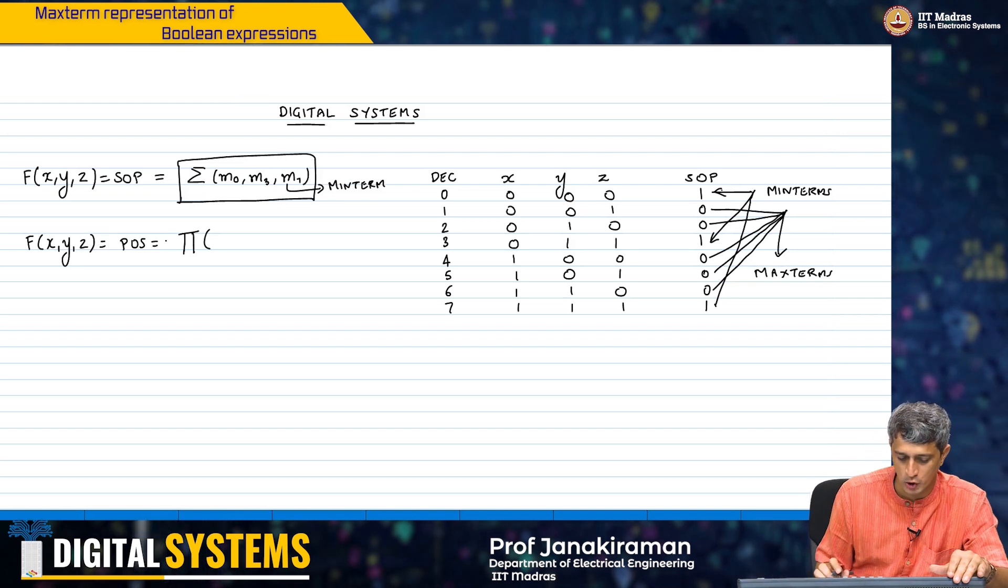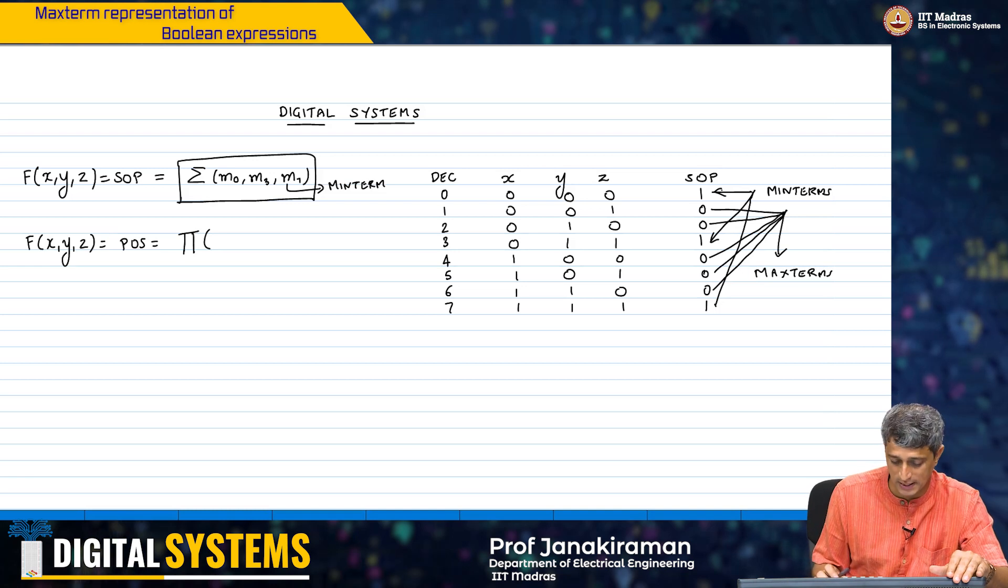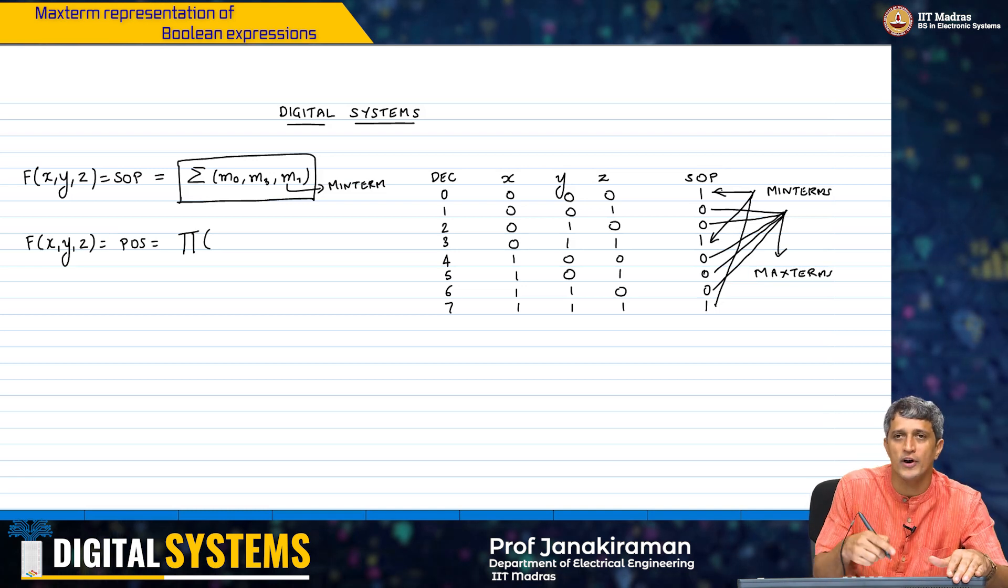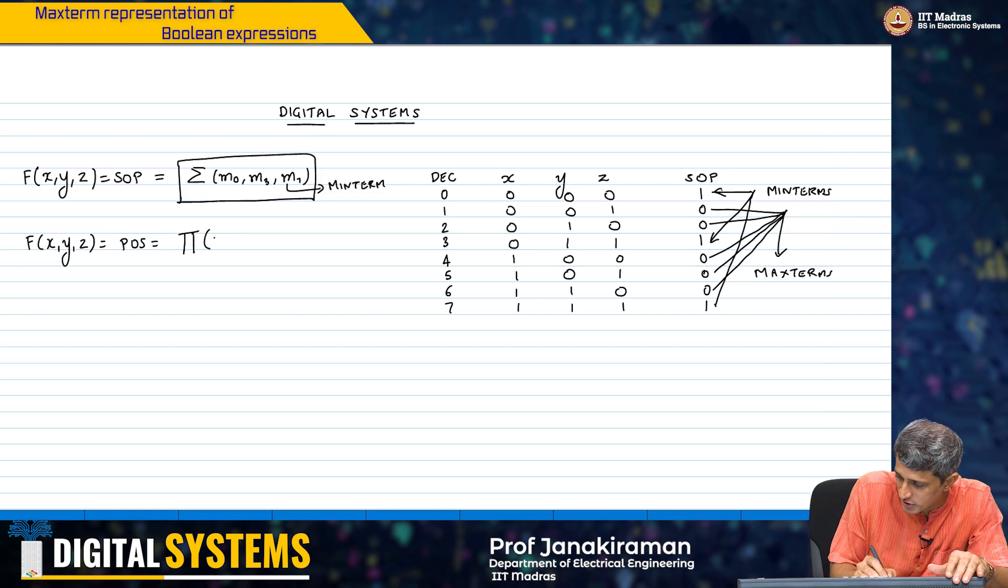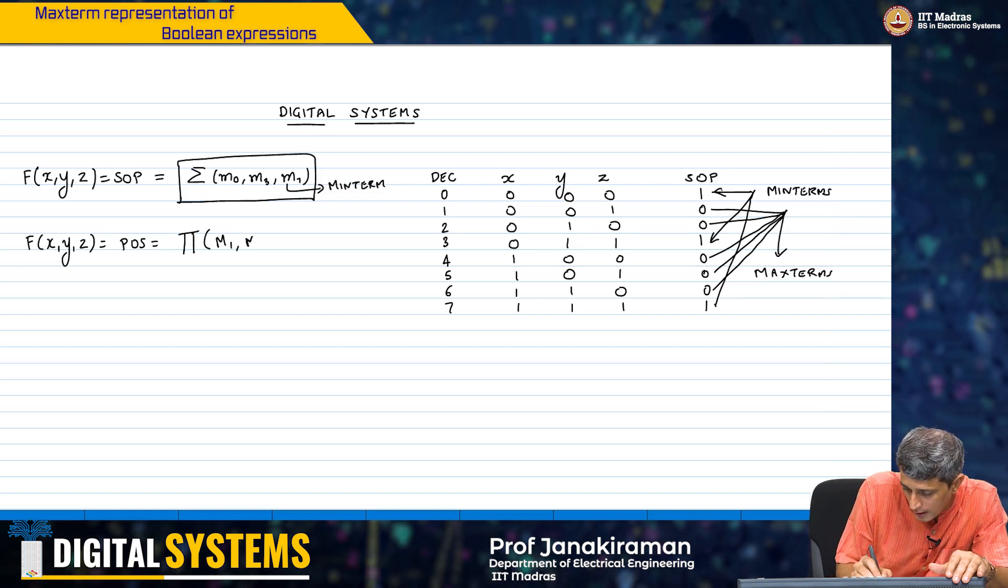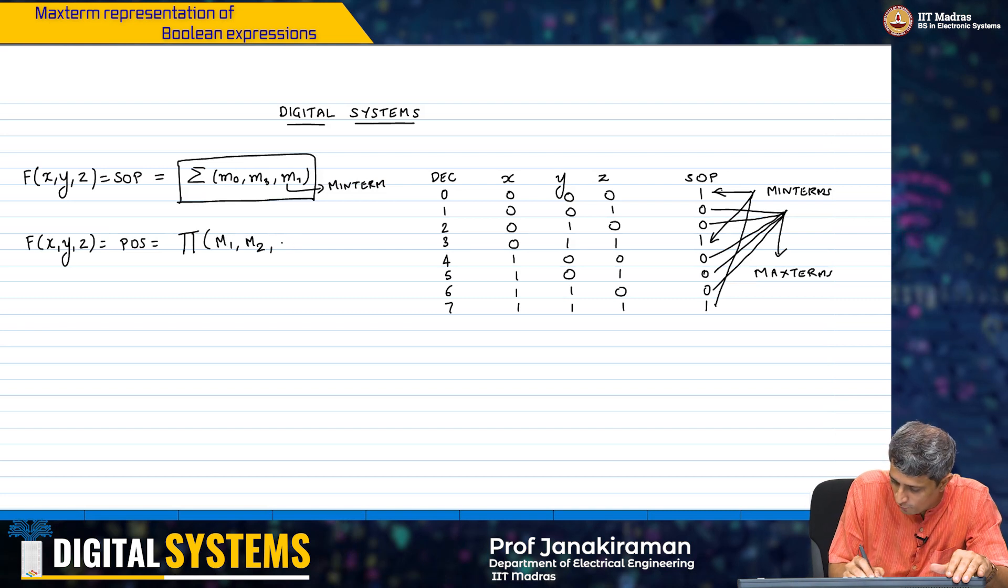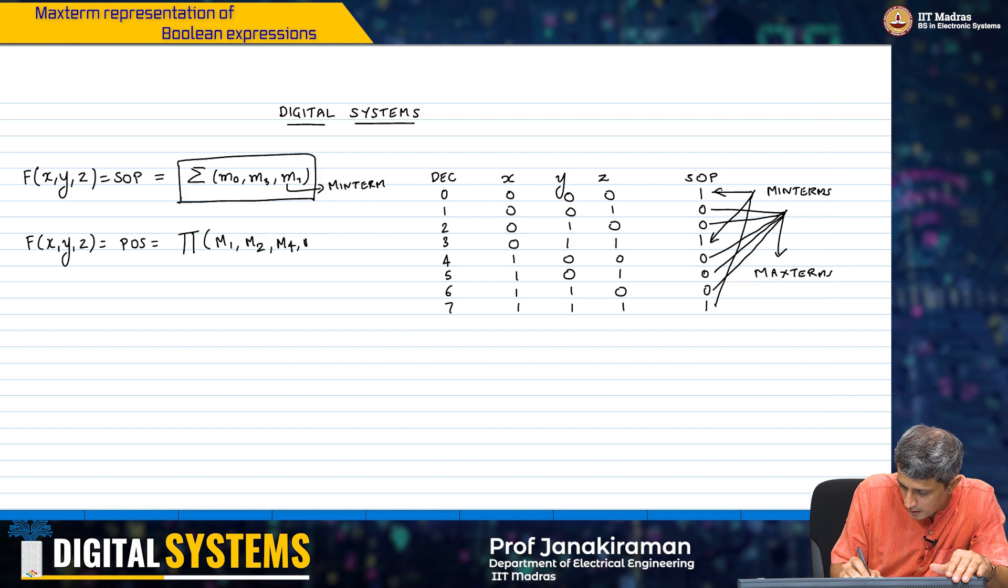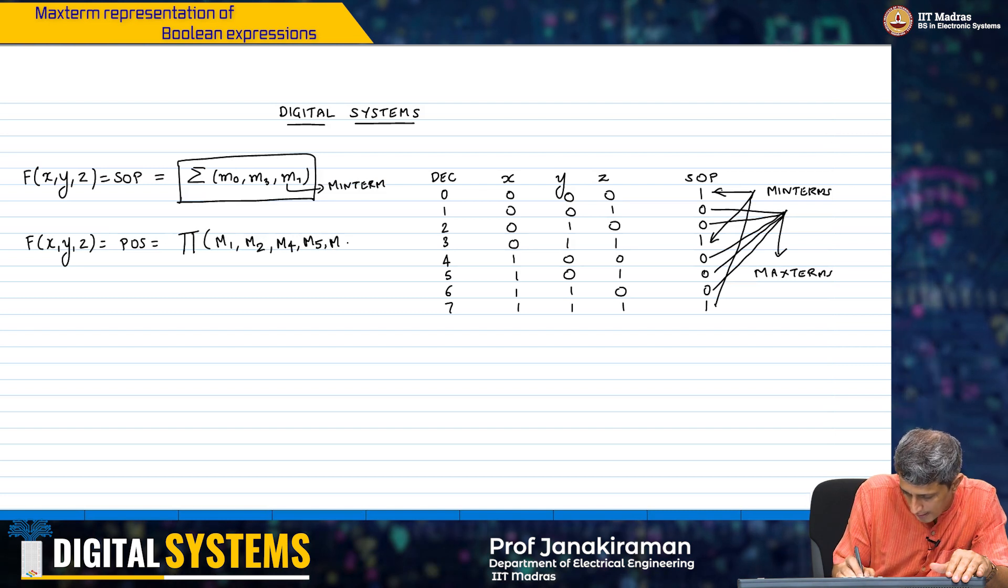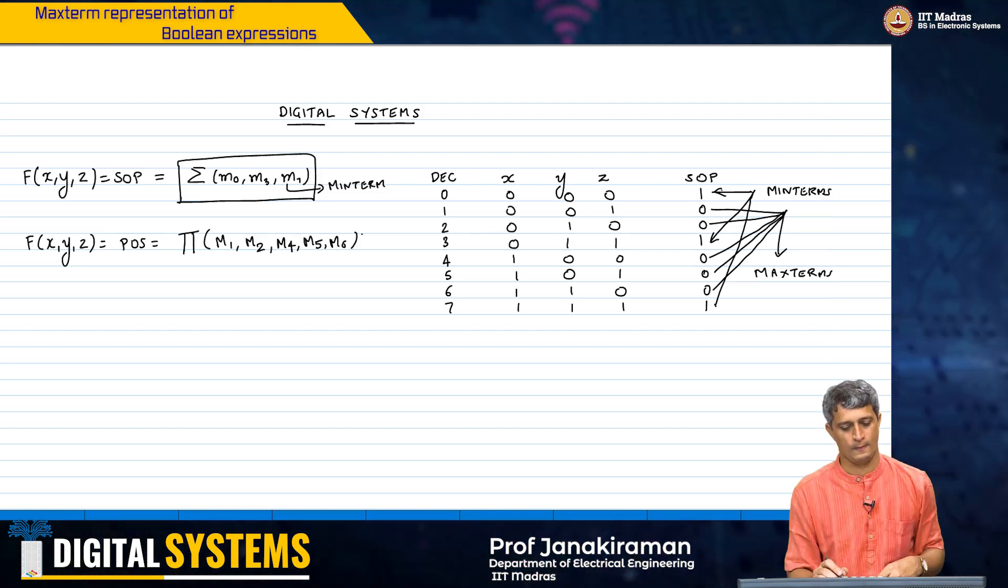And therefore, you can also write this f of x, y, z in the equivalent representation which is m1, m2, m4, m5 and m6.